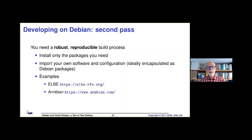What we need is robust, reproducible builds. There are tools that will do this for you — I would highly recommend looking at either LB or Ambien. Both allow you to provide essentially a list of Debian packages and some configuration information, and they will generate your root file system reliably and reproducibly from those scripts.